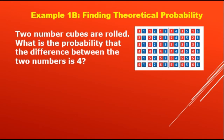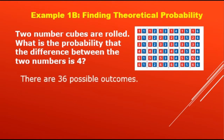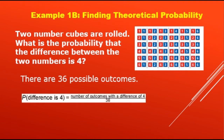Example 1B. Two number cubes are rolled. What is the probability that the difference between the two numbers is 4? We have a red number cube and a blue number cube. If we roll the two number cubes, there are 36 possible outcomes. So for our formula, P(difference is 4) = number of outcomes with a difference of 4 over 36.